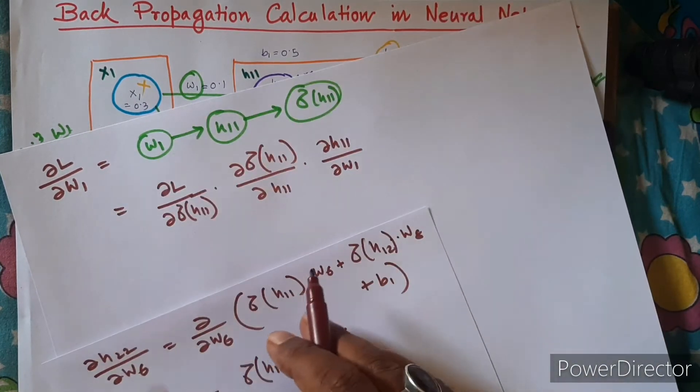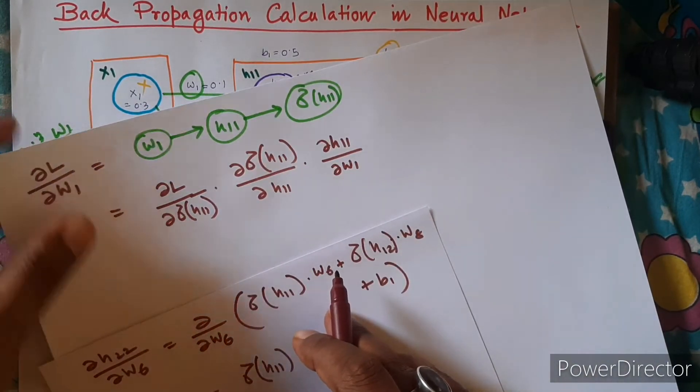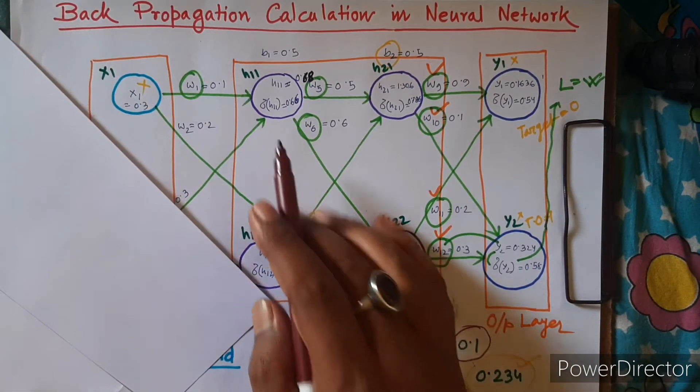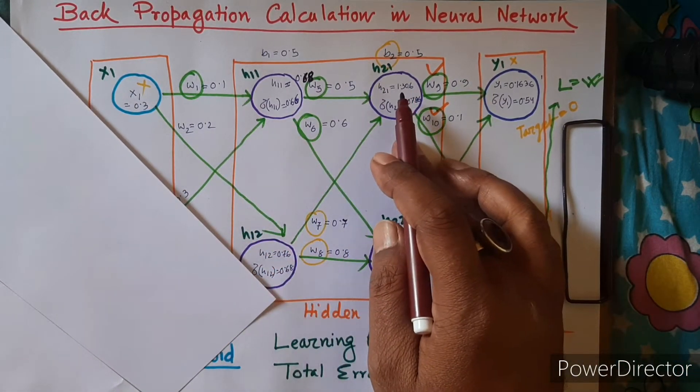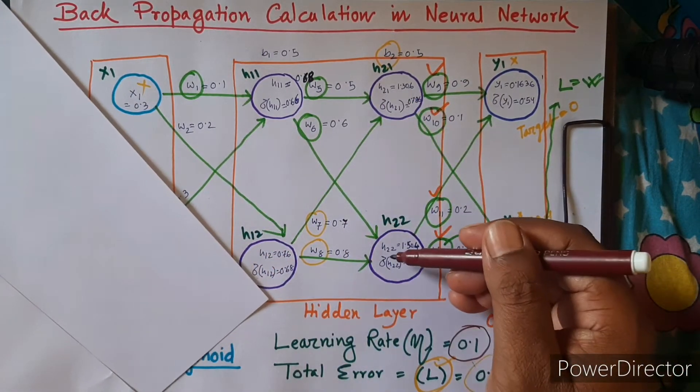Sigma of h11 is contributing to h21 and h22.